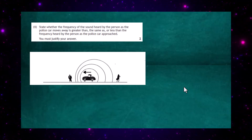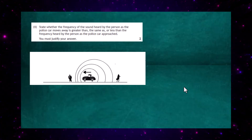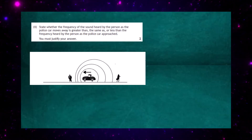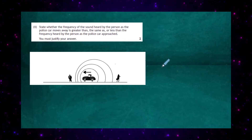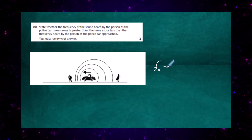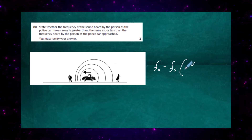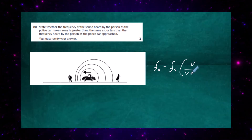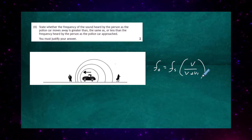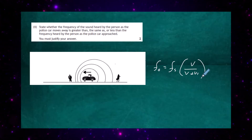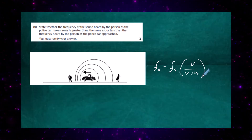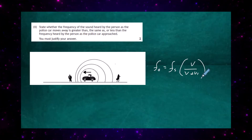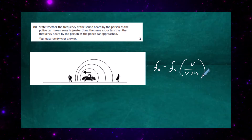As the car moves away, the observed frequency is given by the equation: observed frequency equals the frequency of the source multiplied by the speed of sound divided by the speed of sound plus the speed of the source. Because the car is moving away, we use a plus sign in the denominator. This makes the denominator bigger, and therefore the observed frequency becomes smaller. So the answer is it will be smaller, and the diagram justifies it.